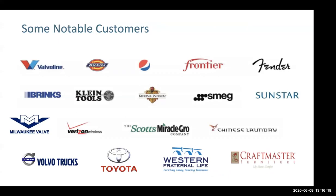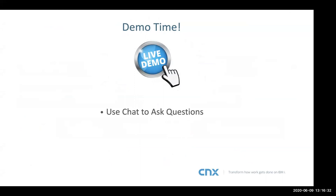Here are some notable customers — Valence is used by large customers in many interesting ways. Now it's going to be demo time. Before I transition to Rob, use the Q&A — not the chat — for questions. A common question that came up: do you need VPN to access this app? You just need a way to get to your IBMI. Whether it's VPN or SSL — to access the apps you need some way to get to your IBMI.